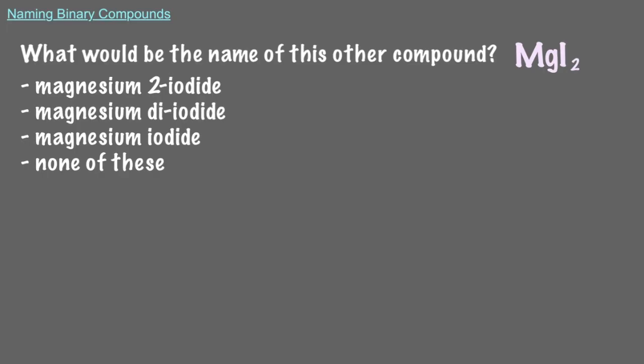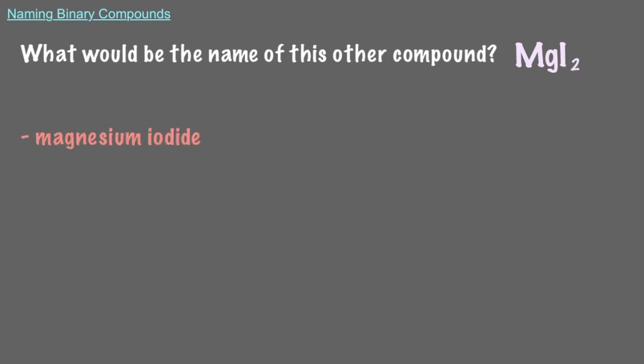Let's do another one. What would be the name of this other compound? Since we have magnesium as our metal and iodine as our nonmetal, we name this compound magnesium iodide. Notice that we do not do anything special because there are two iodines in this compound. As we said before, we never use Greek prefixes for ionic compounds.